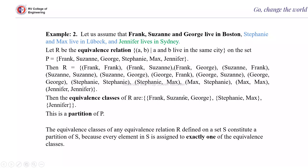So within this subset it is reflexive — (Frank, Frank), (Susanne, Susanne), (George, George) — and symmetric: (Frank, Susanne), (Frank, George), (Susanne, Frank), (George, Frank), (Susanne, George), (George, Susanne). This forms the first equivalence class: {Frank, Susanne, George}.